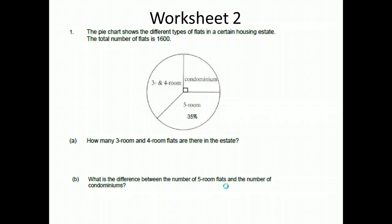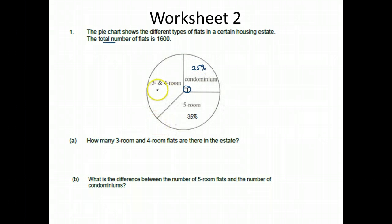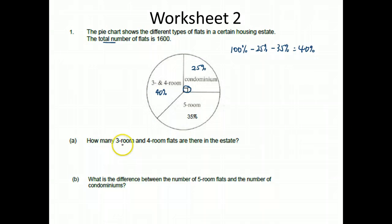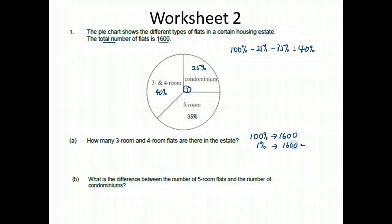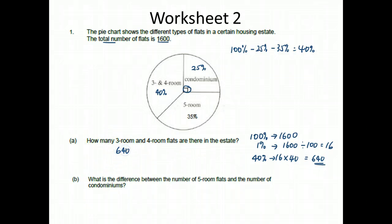Worksheet 2. The pie chart shows the different types of flats in a certain housing estate. The total number of flats is 1,600. There is a right angle here, which is 25%. So 3-room and 4-room flats will be 100% minus 25% minus 35%, which is 40%. Now let's solve: the whole is 100%, which is 1,600. So 1% is 1,600 divided by 100, which is 16. I want to find 40%, so 16 times 40 equals 640 flats. There are 640 three-room and four-room flats.